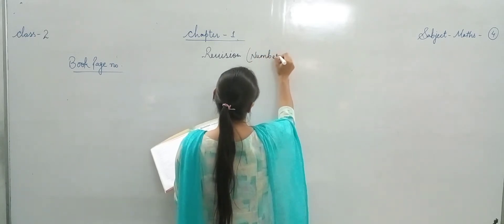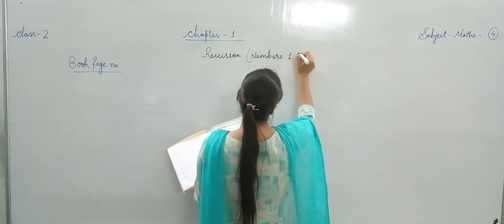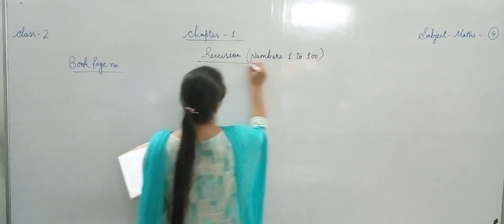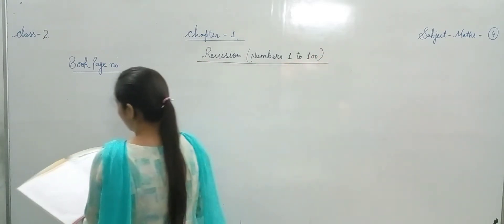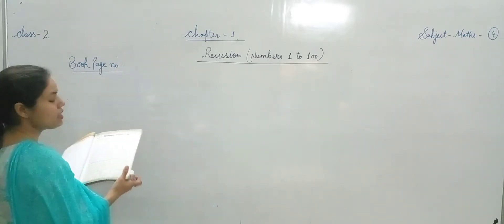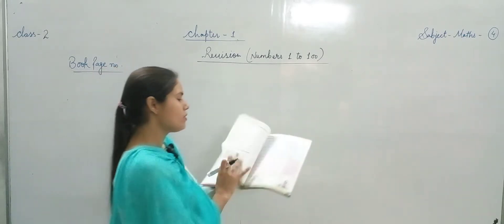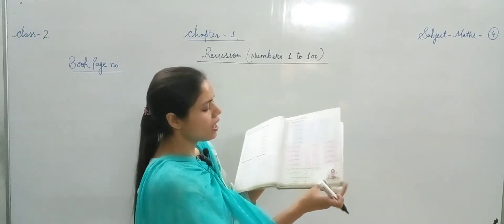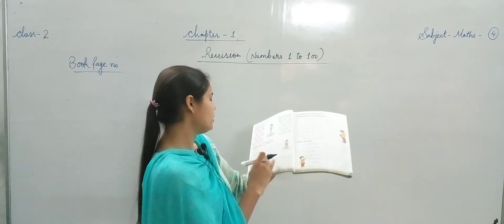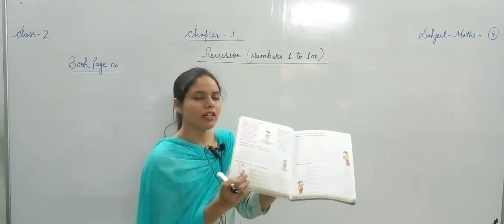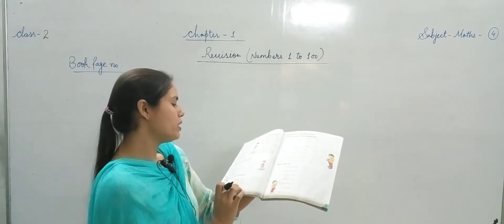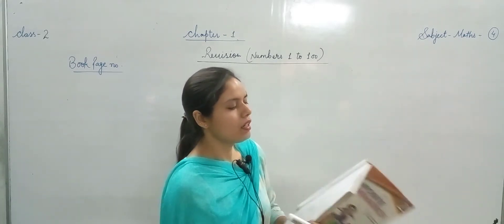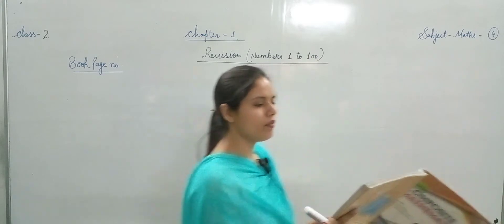Revision numbers 1 to 100. This is your chapter number. In this, book page number 7 is already done, after 7 our page number 8 and 9 before-after is also done. Page number 10 is complete, comparison of numbers, ascending and descending orders. Page number 11 we completed last time — expanded form and short form.